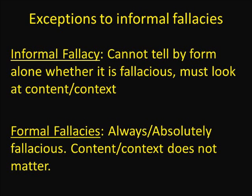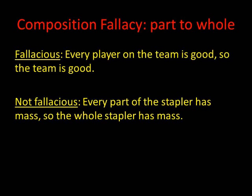Composition is the informal fallacy which happens when we fallaciously move from the part to the whole. For example, if I argue every player on the team is good so the whole team is good, we cannot move from the parts to the whole in this case because they may have poor teamwork — so it's fallacious.